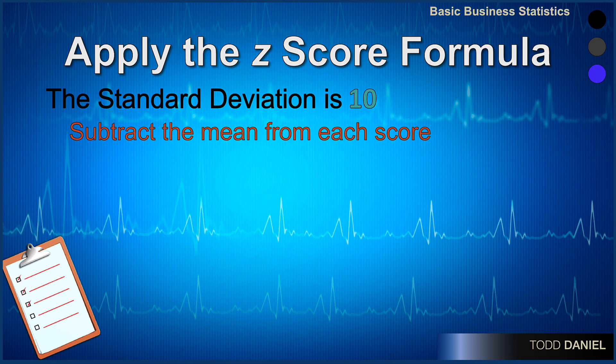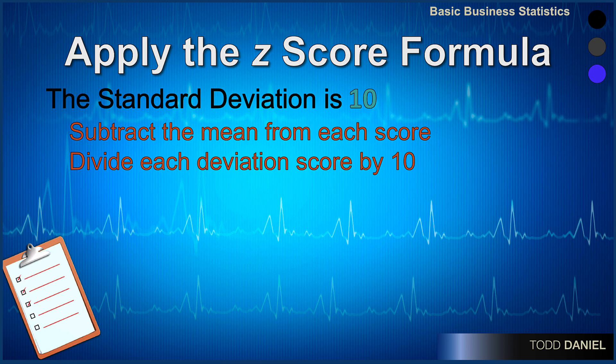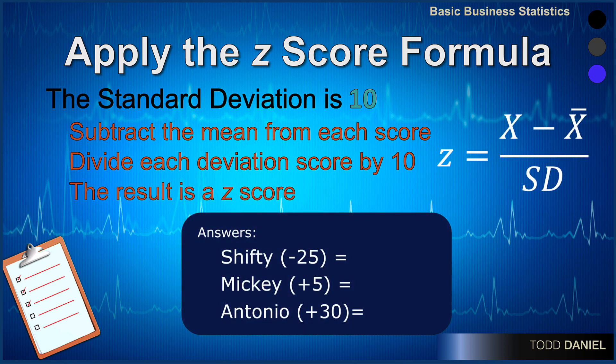All that remains to do, therefore, is to divide each of these deviation scores by the standard deviation to standardize them, and the result will be a z-score. So Shifty, with his deviation of negative 25, has a z-score of negative 2.50. Mickey's deviation was positive 5, giving him a z-score of positive 0.50. And finally, Antonio, with his deviation score of positive 30, receives a z-score of positive 3.00.